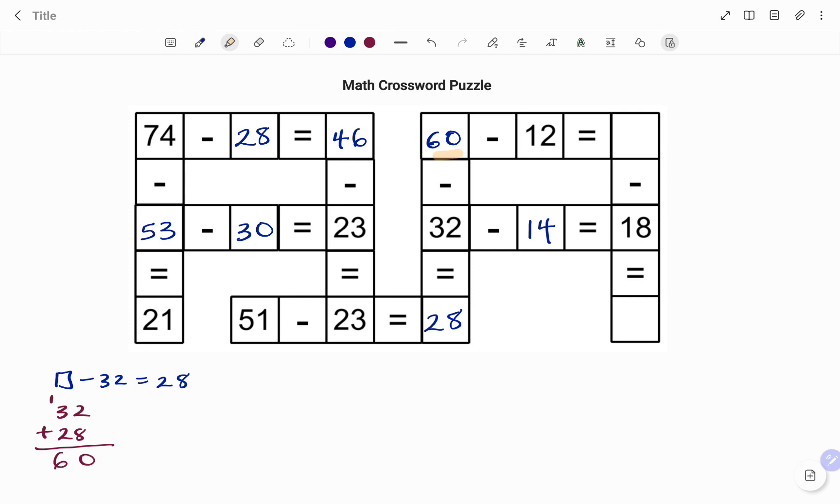Then I can solve the row on my right-hand side, which says 60 minus 12. So I have to regroup. So I take out 1 from 6, that becomes 5. 10 minus 2 is 8. 5 minus 1 is 4. So that will be 48.